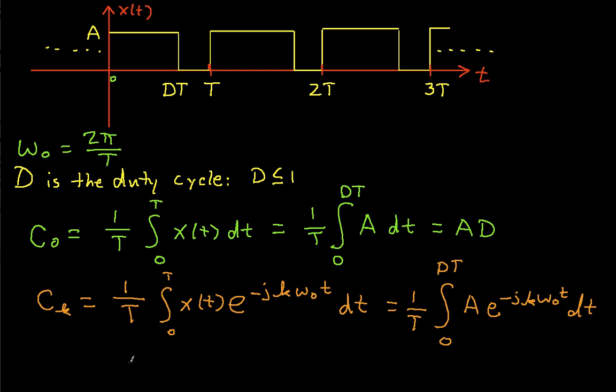And this then, if we work this integral, we'll have an A over T, 1 over minus j k omega 0.